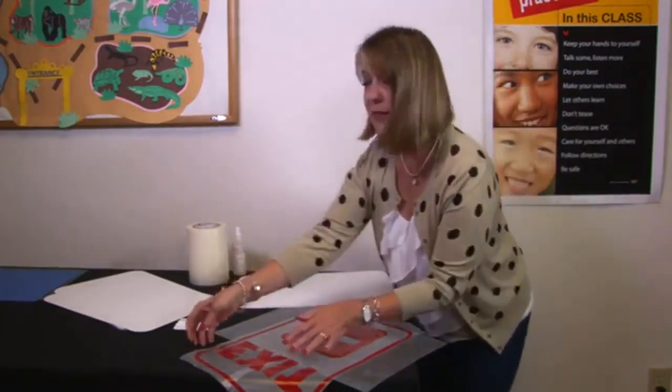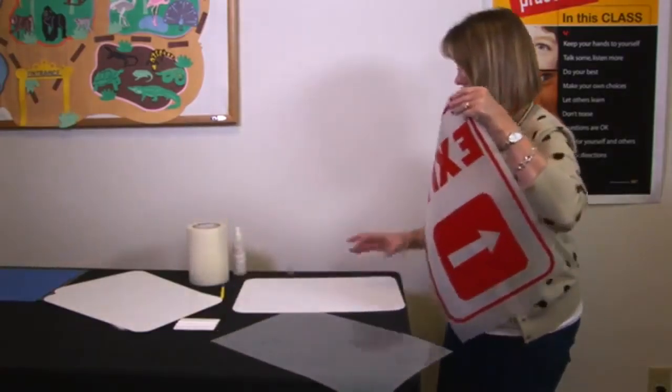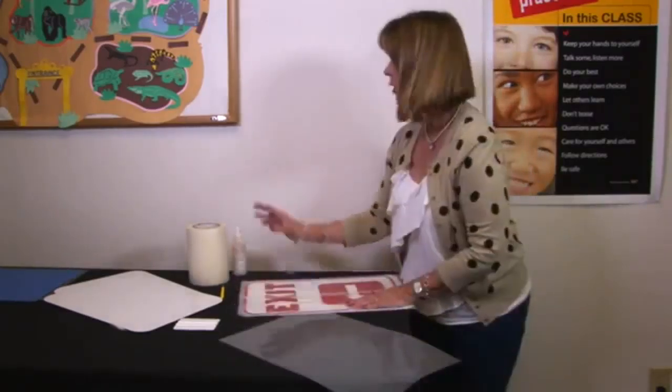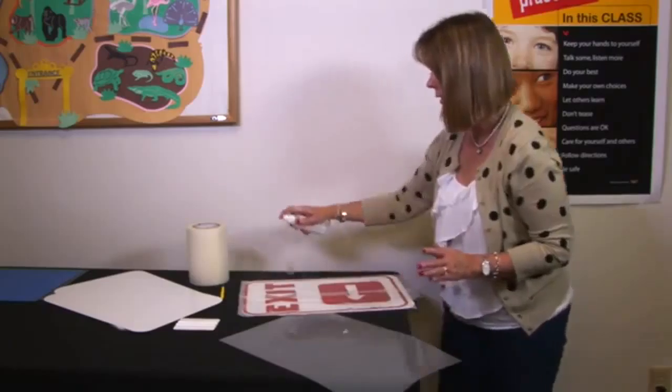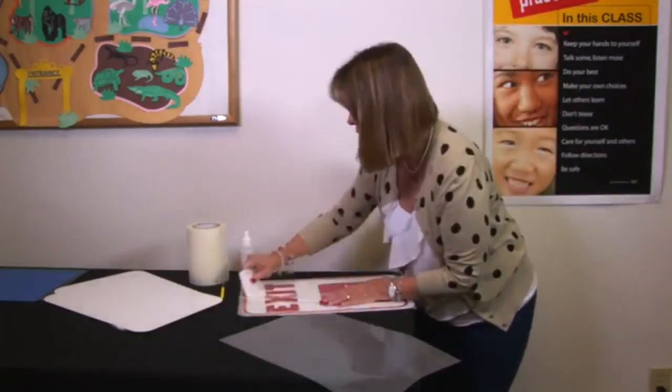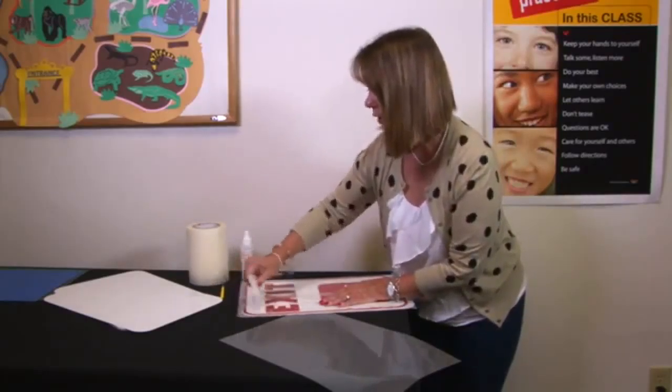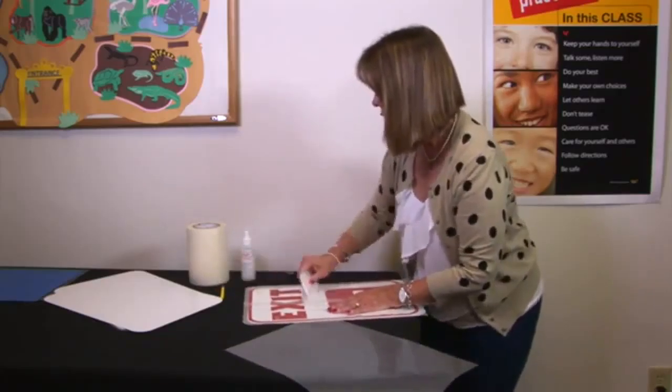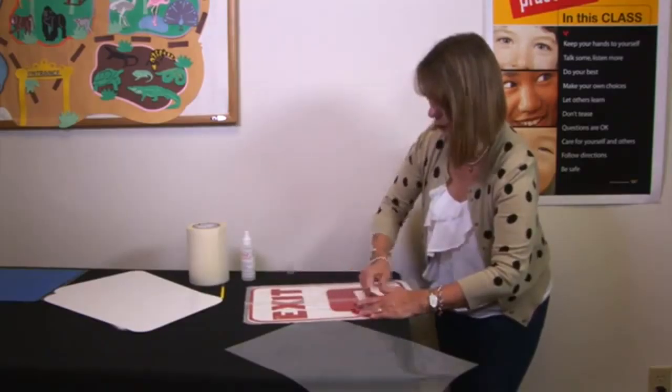Then you want to take your transfer tape and line it up onto the sign. Take your application fluid again to help with the air bubbles, lightly spray the transfer tape and then squeegee it again. This time applying it directly to the sign. A nice fluid motion from the center out. Just like so.